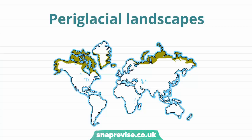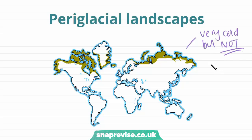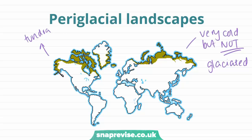To begin with, periglacial landscapes refer to landscapes which are very cold but not glaciated landscapes. As we learned in previous videos, this includes regions called the tundra, highlighted in green here, which are the northern regions of Alaska and Canada as well as northern Russia in Siberia, the outer coast of Greenland and northern Iceland.